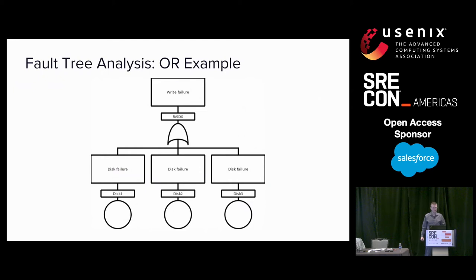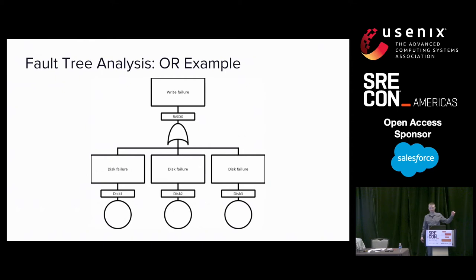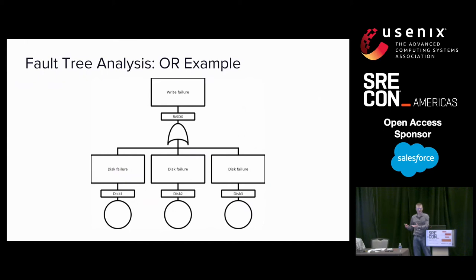Let's first explain what an OR gate is. The example that is a good use case for an OR gate is RAID 0. RAID 0 is a disk array that allows you to write data that will be striped across all of the disks in that array. In this example there are three disks, and crucially, if you lose any one of these disks, you will lose your array — you won't be able to write to the array if you lose any of these disks. An OR gate communicates that same thing.